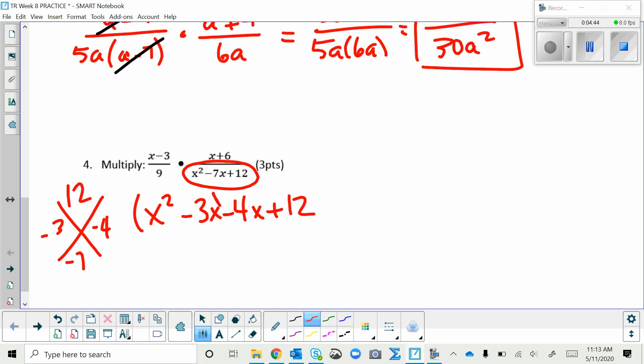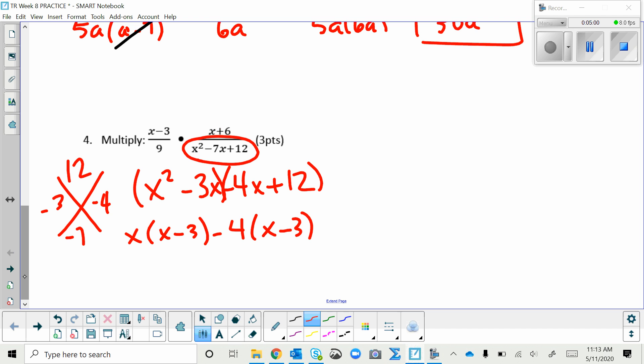I do my grouping. The first group has X in common, so I factor it out. The second group has negative 4 in common, so I factor that out. And now those two groups have an X minus 3 in common, so I factor that out. That leaves me X here and negative 4 here.